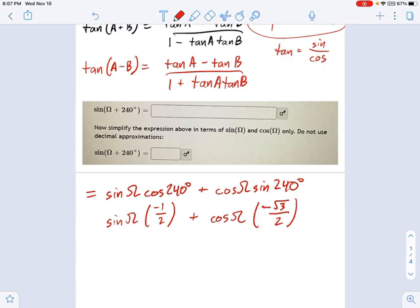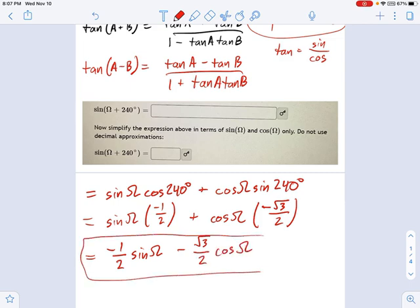So that's not very pretty the way I would simplify this. I mean, there's not much you can do, but I would just move those coefficients into the front. Negative 1 half times sine of omega minus radical 3 over 2 times cosine omega. And that really is where you stop.